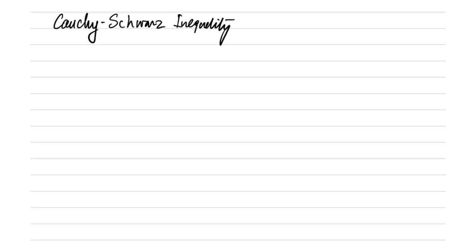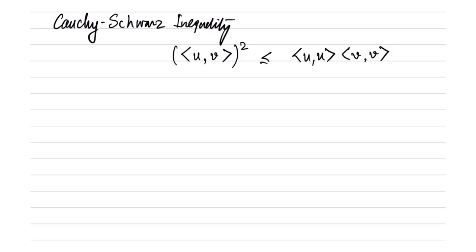Let us look at the general version of the Cauchy-Schwarz inequality and its derivation. The general version states that the inner product between two elements u and v — which could be matrices, vectors, or any elements in a vector space as long as their inner product is defined — satisfies: the inner product of u and v squared is less than or equal to the inner product of u with u, times the inner product of v with v. We will derive this directly from the properties of the inner product.